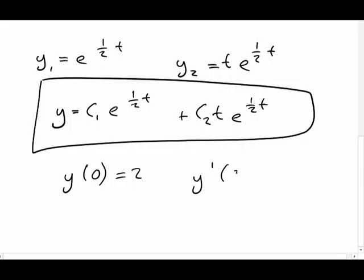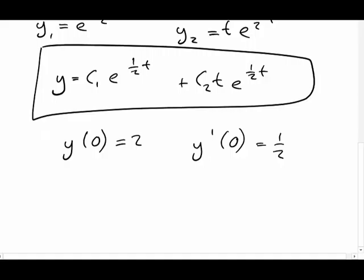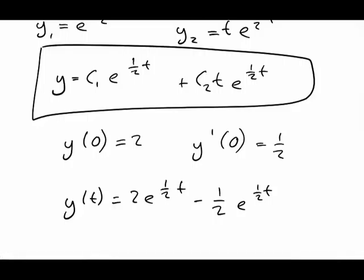to find out what c1 and c2 is. So let's say, for example, we have the initial data that when t is 0, we plug it into this formula, we end up with 2. And the first derivative, when t is 0, is a half. Now I'm going to leave you to do that yourself. I'm not actually going to do it in this video. And you should get that y of t is equal to 2 e to the half times t minus a half times e to the half times t.